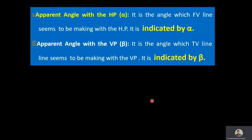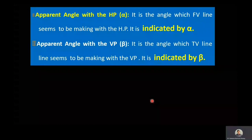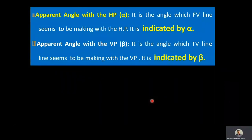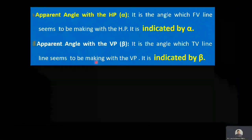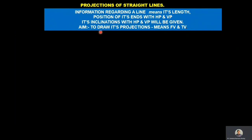Now we will discuss what information is supplied in the problem and what are the cases under projection of straight lines. In order to draw the projection of straight lines, the basic information supplied includes the line's length, position of its ends with HP and VP, and its inclinations with HP and VP. We are then asked to draw front view and top view.